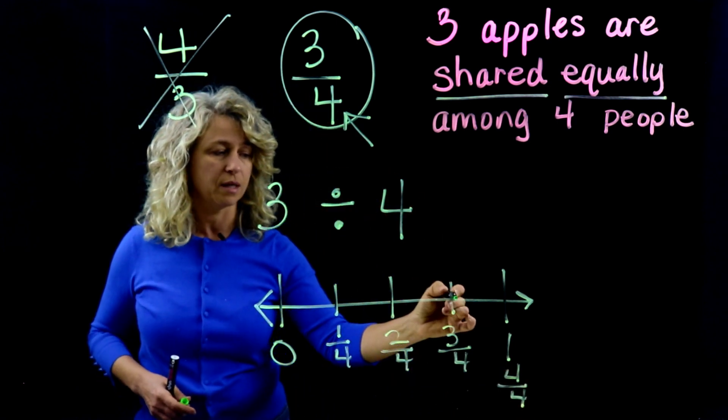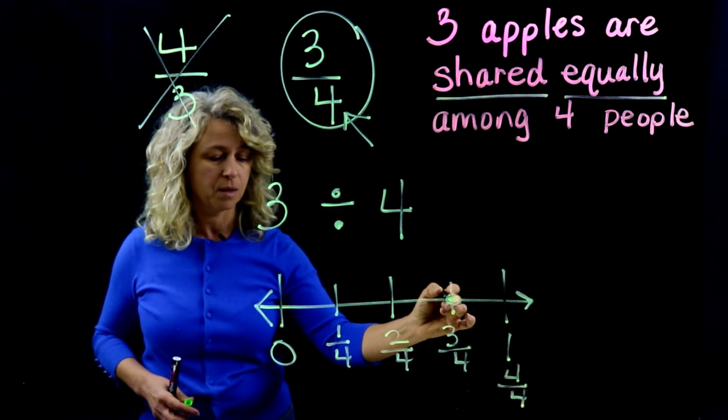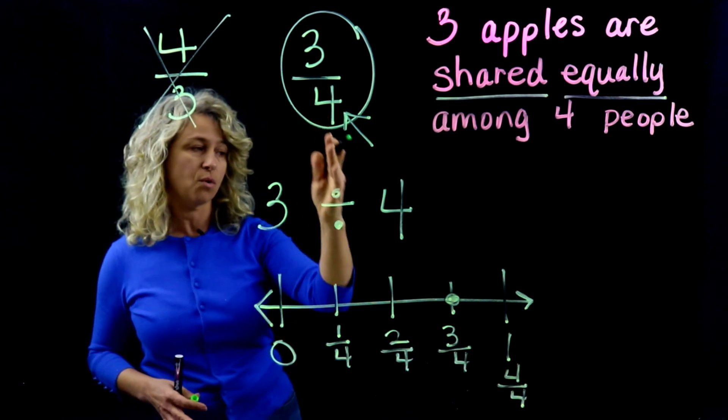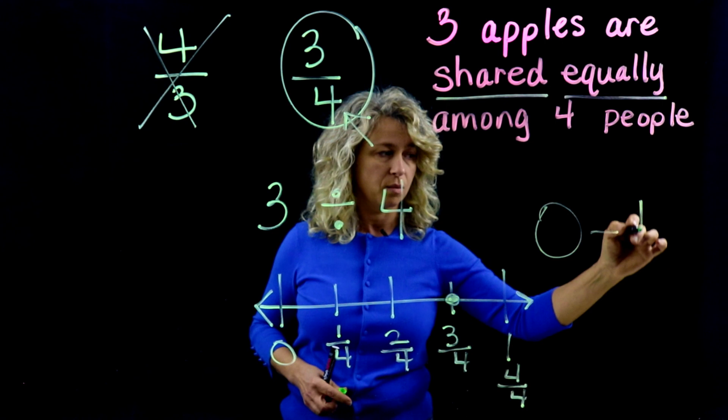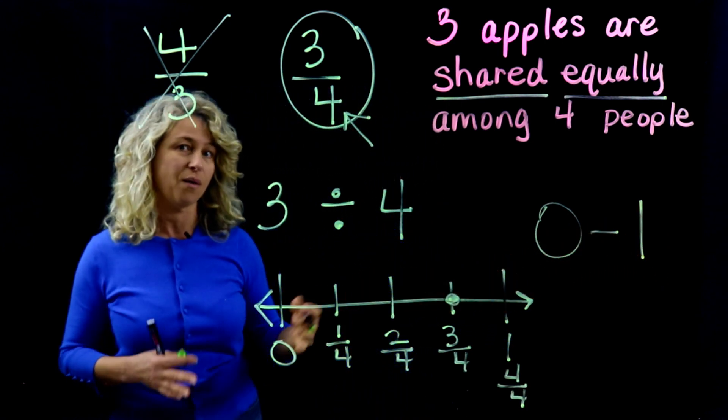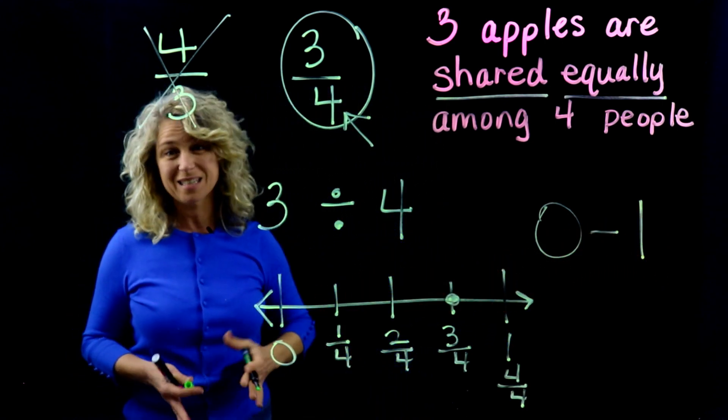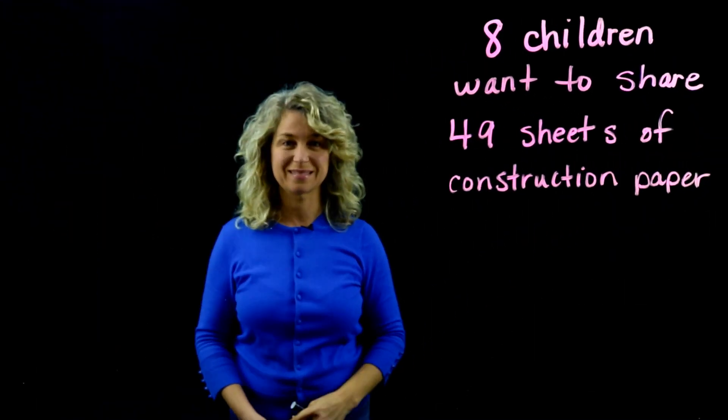And three-fourths would land right here. So you can see that three-fourths is between the whole number zero and the whole number one, so it lies between zero and one. Okay, so let's look at another example.